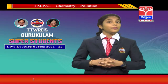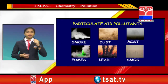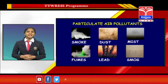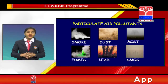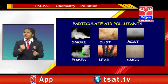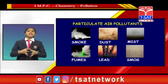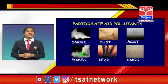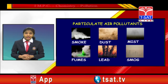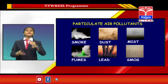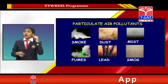Now let us move to particulate air pollutants, which include smoke, dust, mist, and fumes. Smoke refers to solid and liquid airborne particles produced by the burning of compounds. Dust consists of fine particles about one micron in diameter produced by chiseling, grinding, pulverization of coal, and fly ash from factories. Mist is produced by spraying insecticides and herbicides in agricultural fields. Fumes are generally observed in chemical reactions like distillation and boiling.